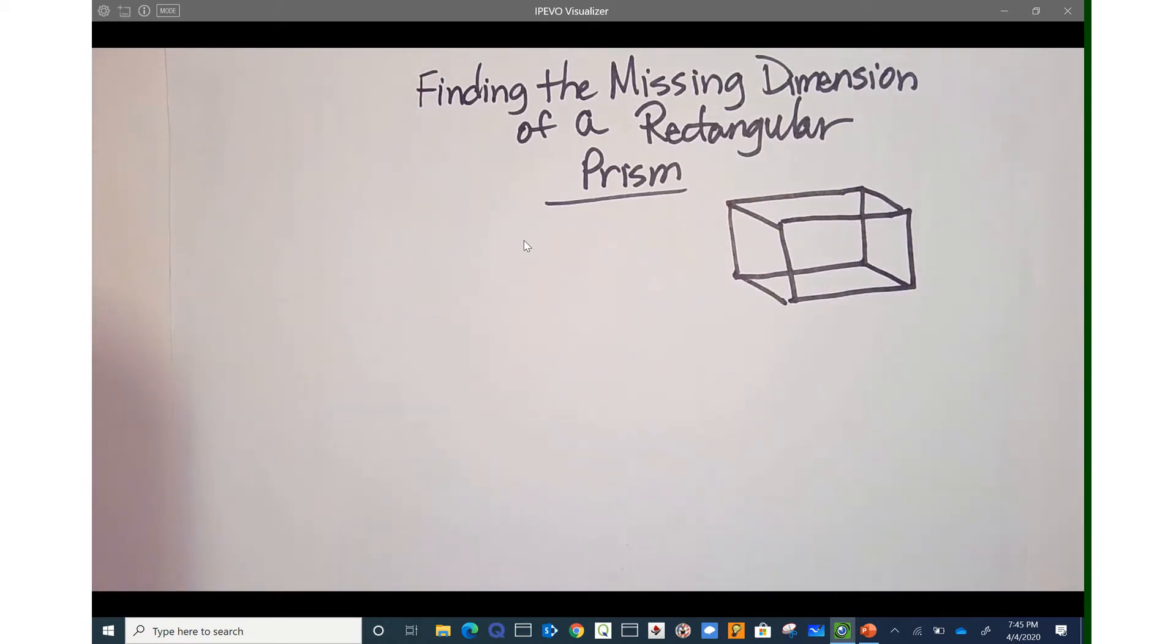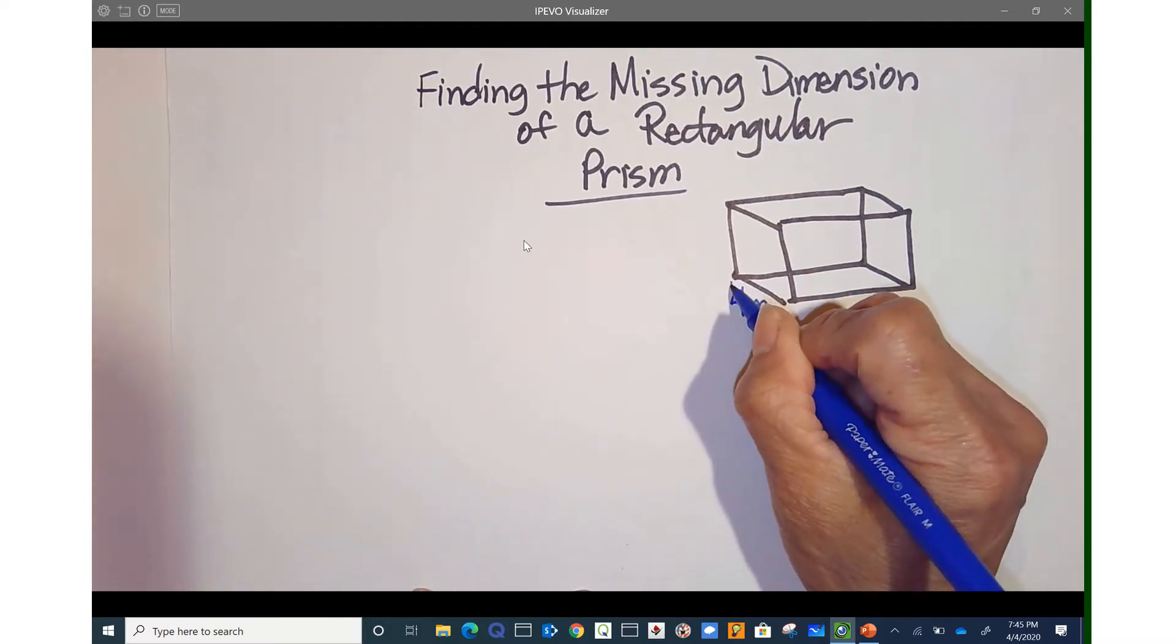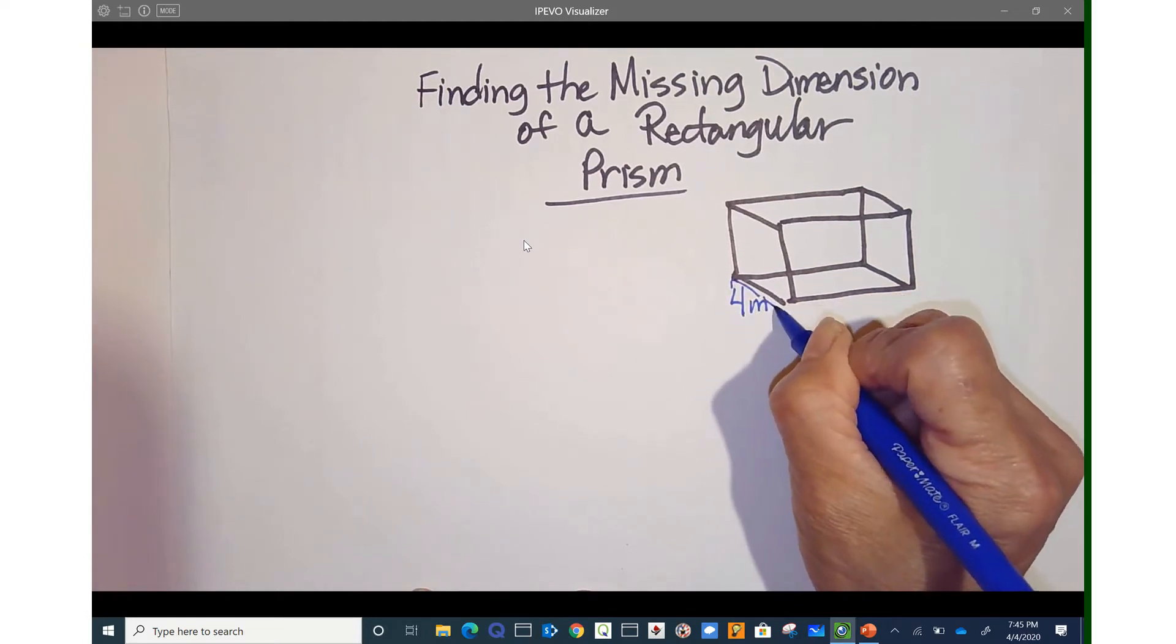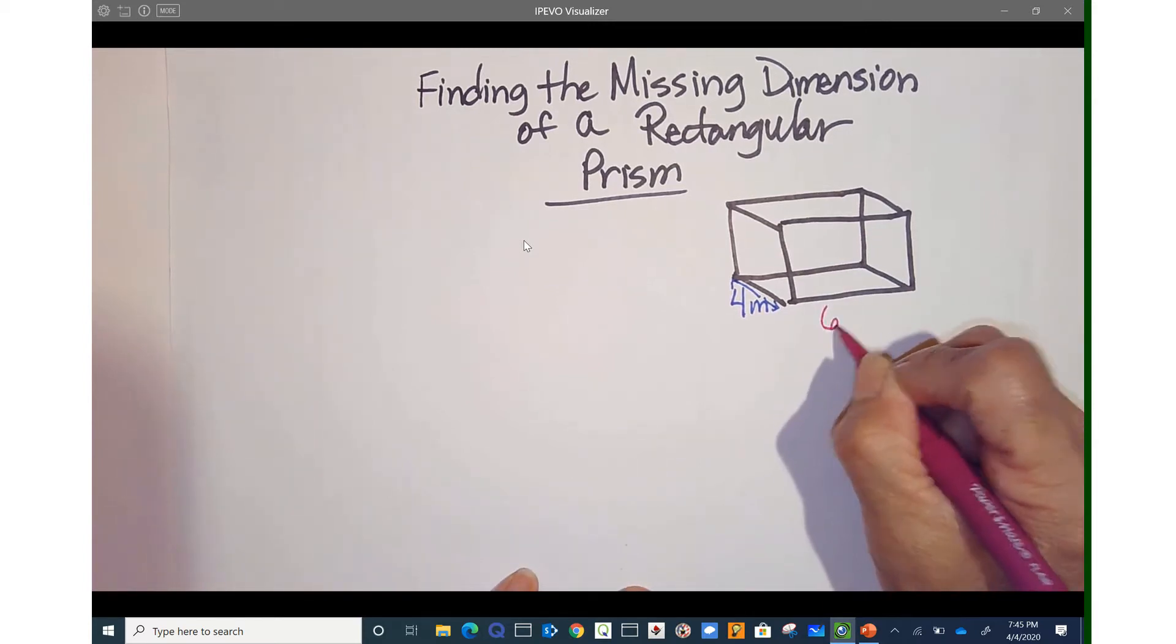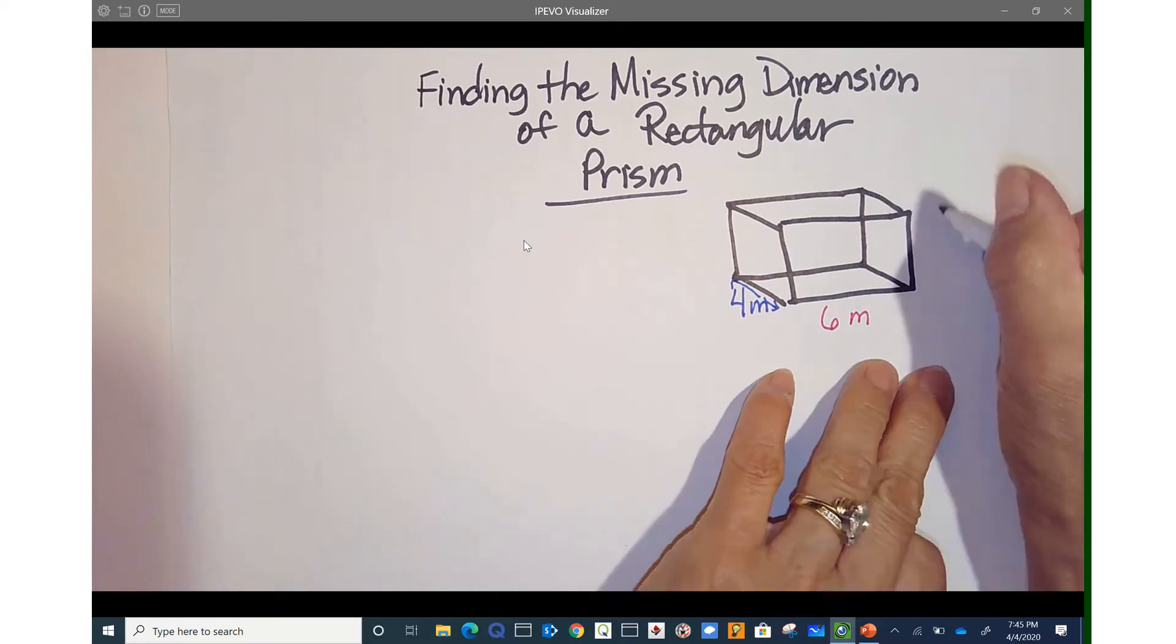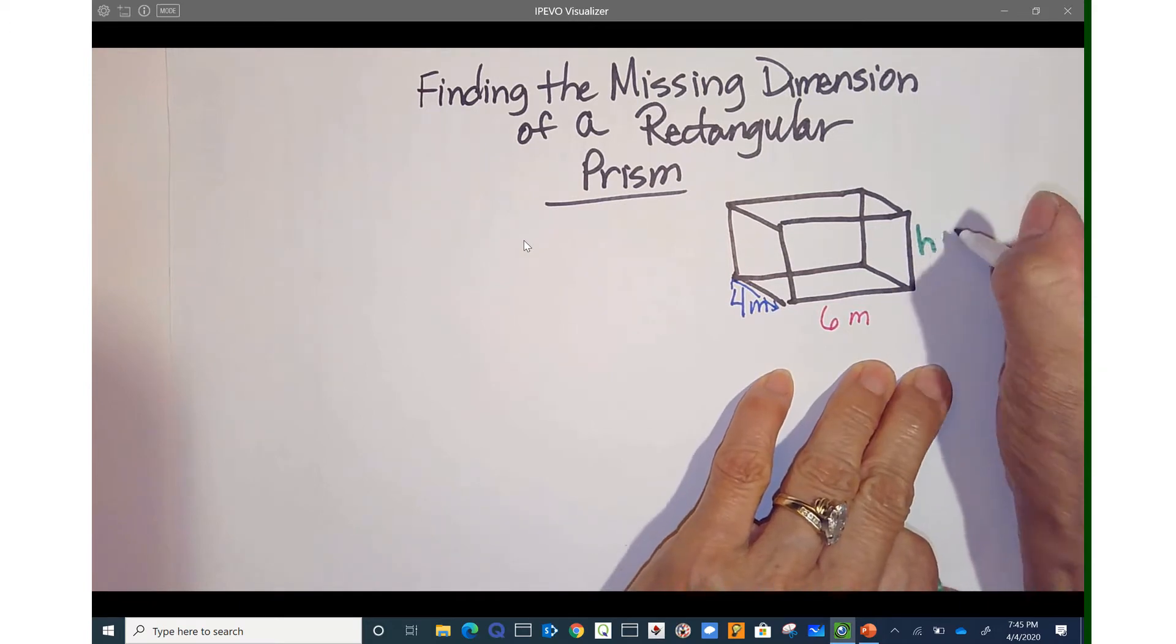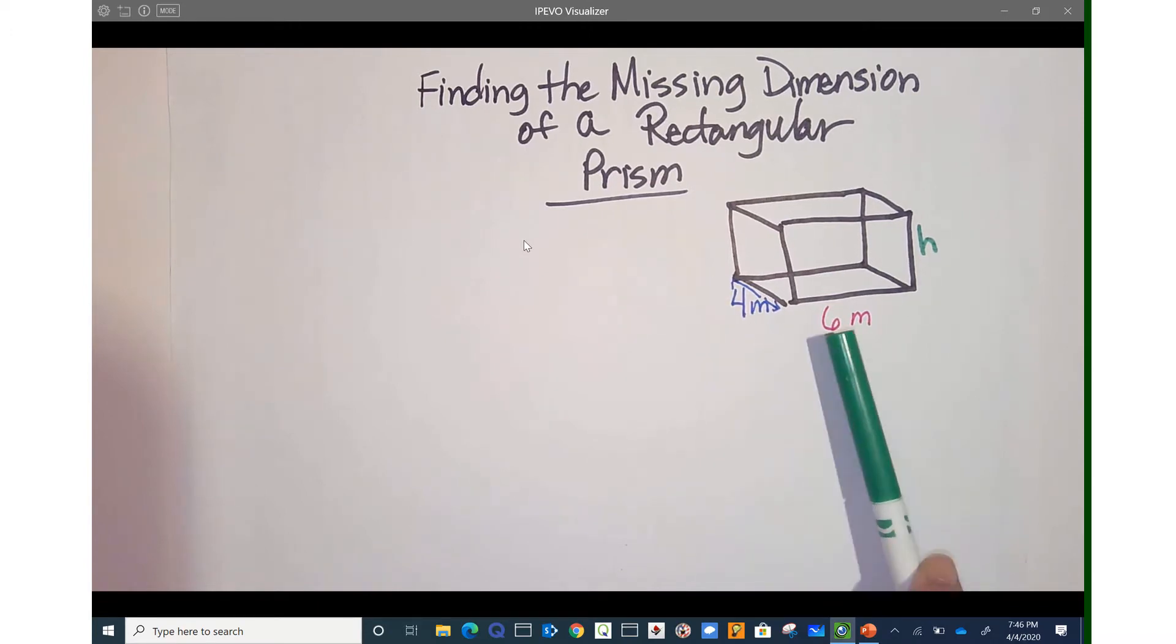I'm going to label all of my information that I have, my sides. So I'm going to label this four meters here. This will be six meters. And the missing dimension will be my height. I do not have a height. This is considered a base and this is considered a base, or this can be considered a length and a width.